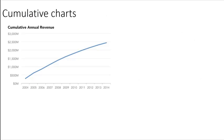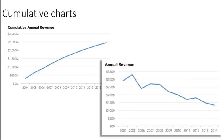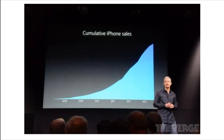Cumulative charts can mislead — if you aren't aware of the difference between revenue and cumulative revenue, you might be misled into thinking that revenue is steadily increasing over time, when in fact it's not. Tim Cook at an Apple presentation in 2013 showed cumulative iPhone sales, which looks awesome — cheerleading at its best. But actually this chart is quite misleading; at worst it's disingenuous.